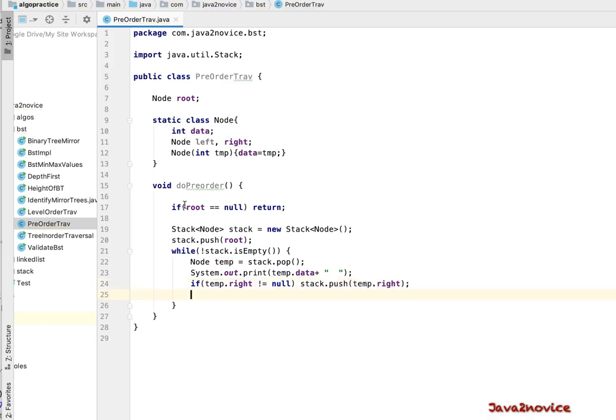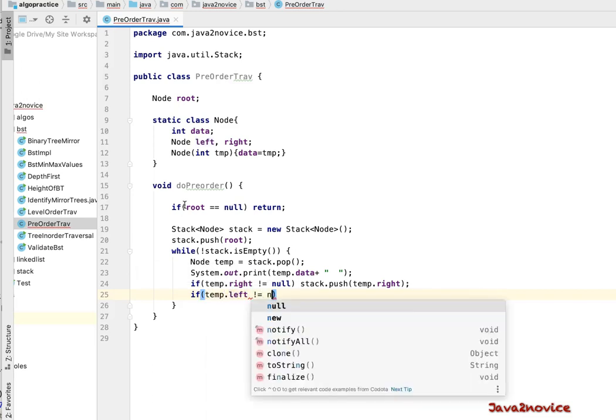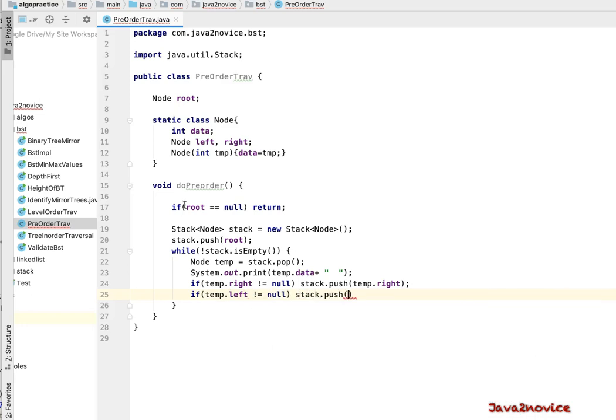Similarly, check if popped out node left child is not null. In such cases, push it to stack. If temp.left is not equal to null, push it to stack.